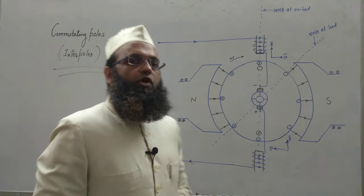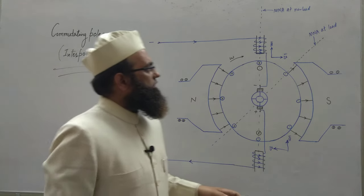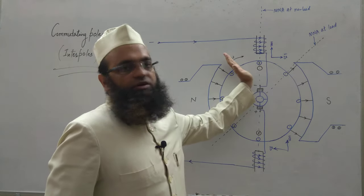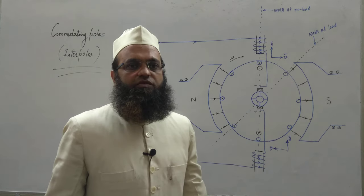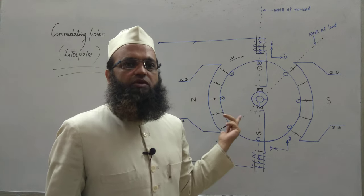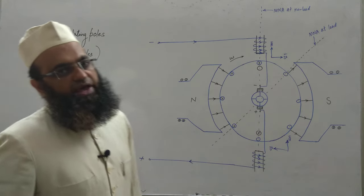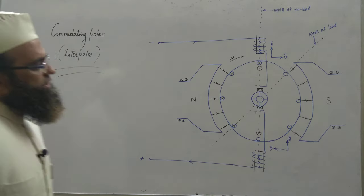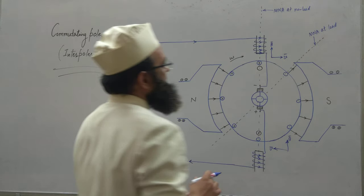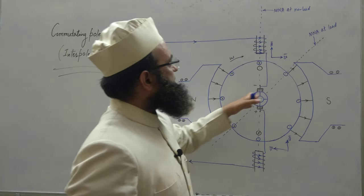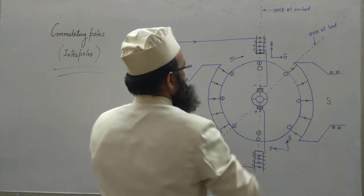These interpoles work for generating mode as well as motoring mode. In motoring mode, the MNA shifts in the opposite direction. Also, the armature currents reverse, so the flux direction also reverses in the windings of the interpoles. It takes care of both modes — generating mode as well as motoring mode. The current flowing in the shown direction creates a south pole here and a north pole on the other side.